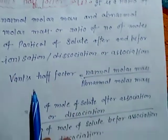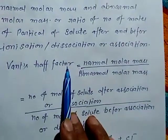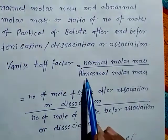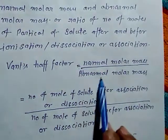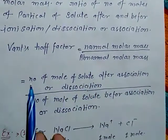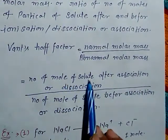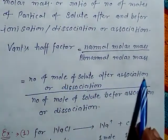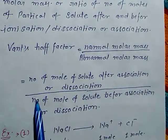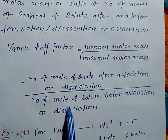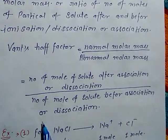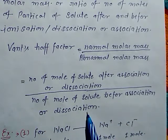The Van't Hoff factor is formulated as normal molar mass upon abnormal molar mass, or number of moles of solute after dissociation or association, upon number of moles of solute before association or dissociation.